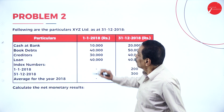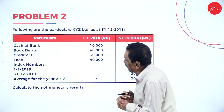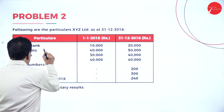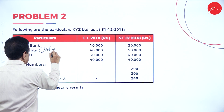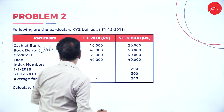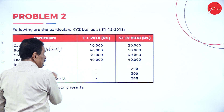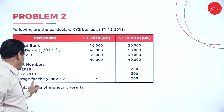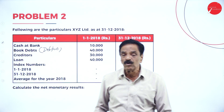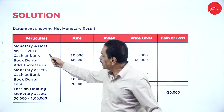The next problem involves XYZ Limited. Assets as at 31st December: cash at bank 10 lakh and 20,000; book debtors 30,000 and 50,000; creditors 30,000 and 40,000; loan 40,000 and 40,000. Index on 1st January is 200, on 31st December is 300, and average for the year is 240. Calculate the net monetary result.